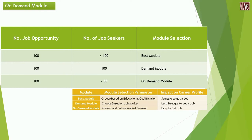Similarly, the number of job seekers should be more or less 100. If we consider the best module, then there are 100 job opportunities available in the market, but more than 100 students or job seekers are seeking for the job. So as a result, if you select the best module, there might be a probability that you have to struggle hard in the current digital IT market to grab the job opportunity.